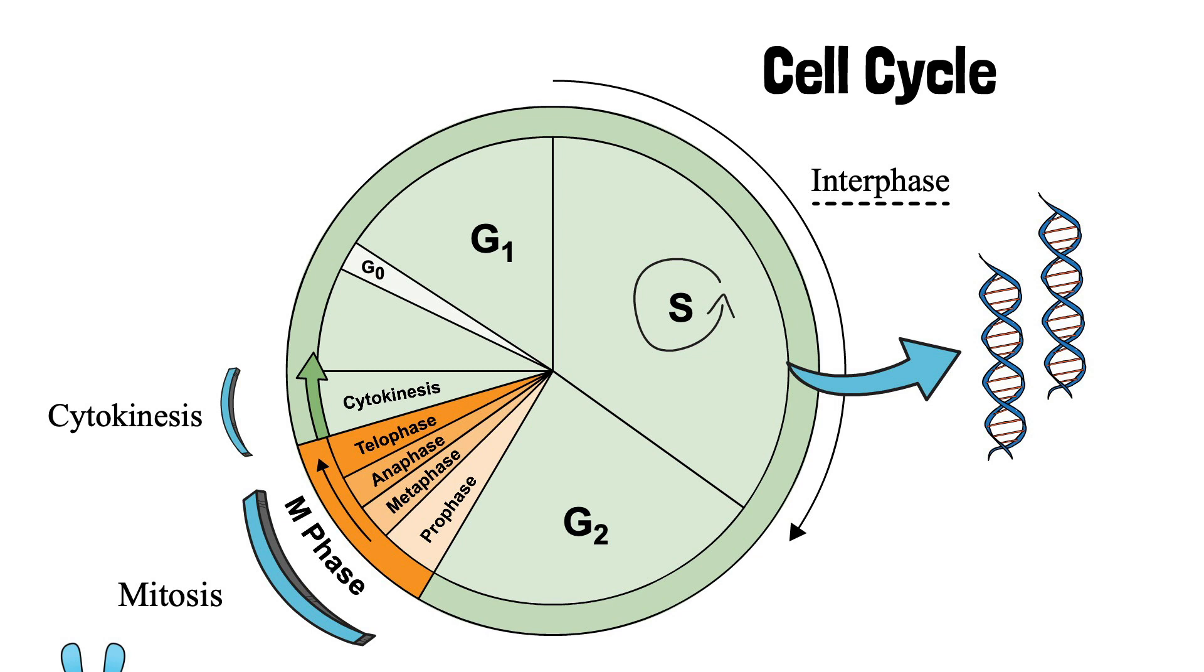There is a defined period of time between the end of DNA synthesis phase and the beginning of M phase. This period is termed as G2, or the second gap phase.